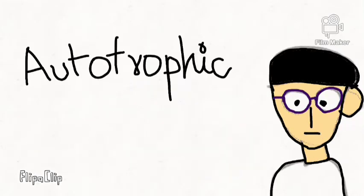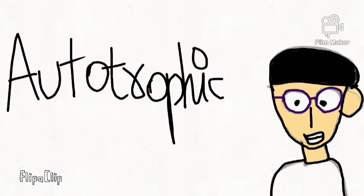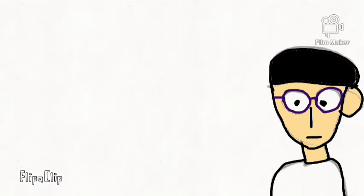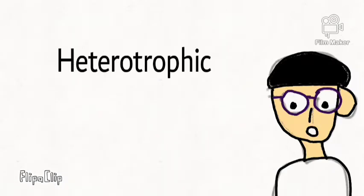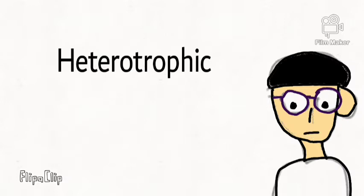In the word autotrophic, 'auto' means self and 'trophic' means to feed. From the word heterotrophic, 'hetero' means another. Now that we know the meanings, let us see their definitions.